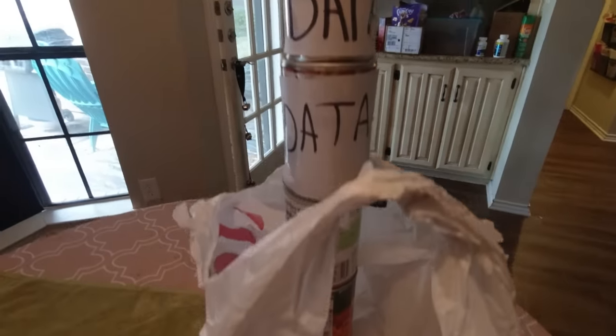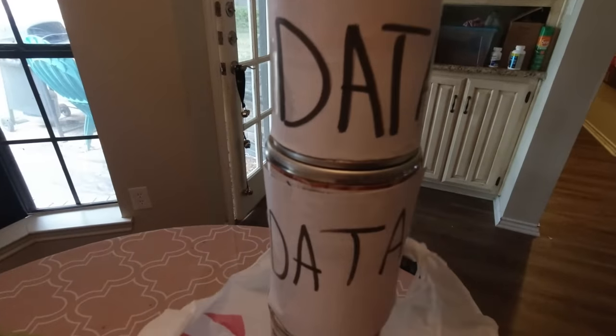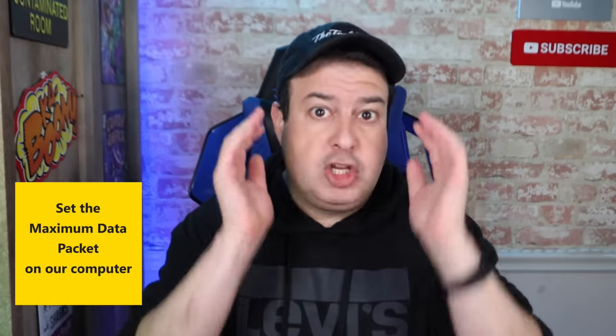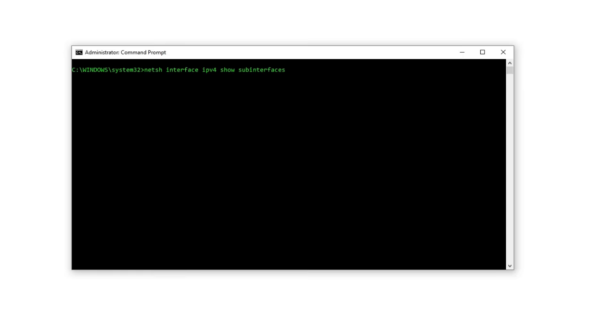This is done in two steps. Step number one is to find out what is the maximum data packet our computer can handle, as we don't want to overfill our data packet. If we do, just like the carrier bag, items are going to drop out — data is going to drop out and it's going to require more trips. Once we have that, we move on to step number two, which is to tell our computer to use this as the MTU size. Both of these steps are super simple and I'm going to show you exactly how to do that.